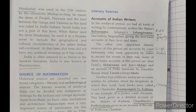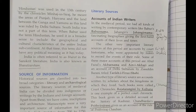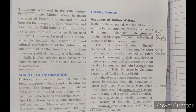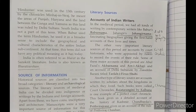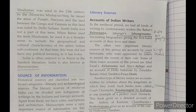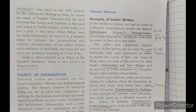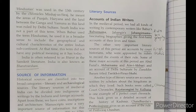The third paragraph is about chronicles. A chronicle is a fact-based written account of historical events. Examples include Rajatarangini by Kalhana, which is about the history of Kashmir, and Chand Bardai's Prithviraj Raso, which is about the rule of Prithviraj Chauhan. Chronicles generally cover the history of a particular area or state.